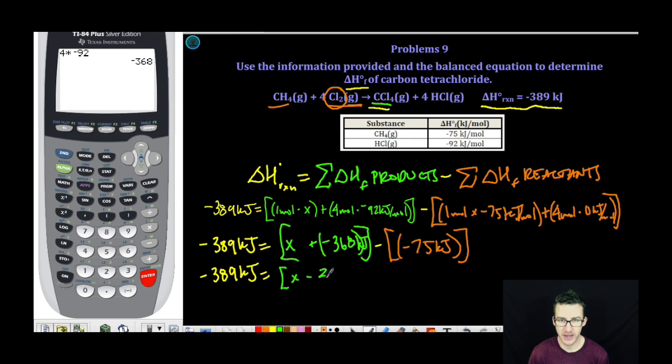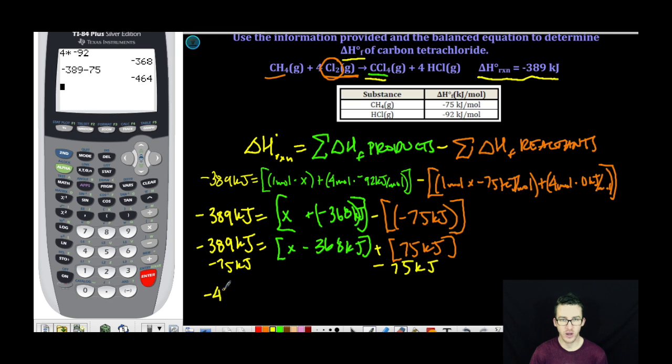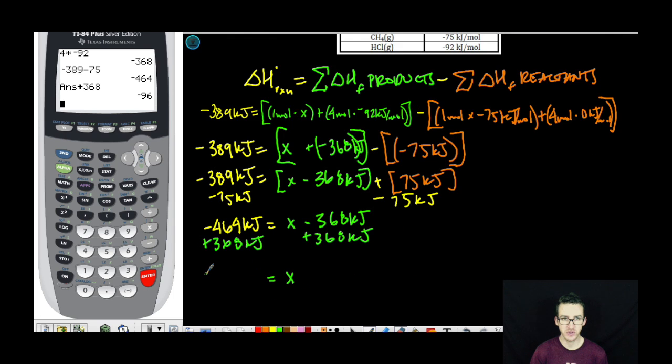And since we're minusing a negative here, we're really going to plus this. So I'm going to subtract 75 from each side. Negative 464 kilojoules equal to X minus 368. We then add 368 to each side. X is equal to negative 96 kilojoules. That is the heat of formation of our carbon tetrachloride. So similar type problem. You're still using this equation, except you are just going to solve for a different part of it.